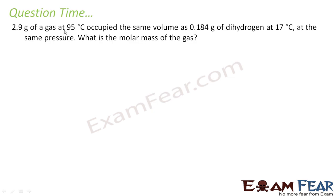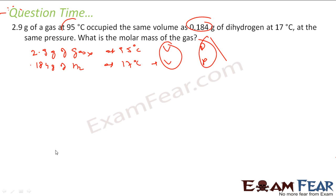So the question says 2.9 gram of gas at 95 degrees Celsius occupies the same volume as 0.184 gram of dihydrogen at 70 degrees Celsius at the same pressure. We have to find the molar mass of the gas. Both gases occupy volume V at the same pressure.